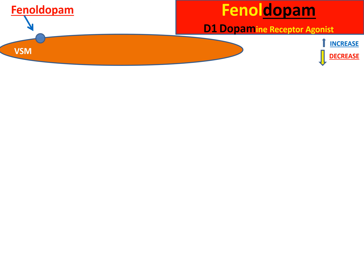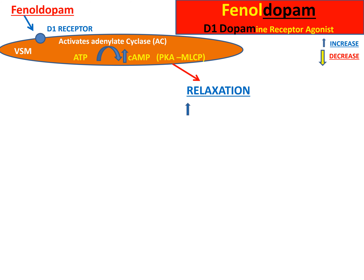Fenoldopam is a D1 dopamine receptor agonist that works by stimulating D1 receptors in the vascular smooth muscle. This activates adenylate cyclase enzyme, converting ATP to cyclic AMP. Cyclic AMP activates protein kinase A, which activates myosin light chain phosphatase, decreasing cross-bridging between actin and myosin and leading to relaxation, which decreases peripheral vascular resistance.